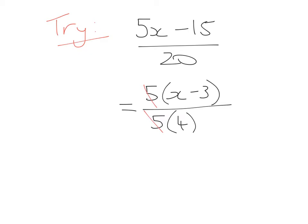Therefore, the 5s are going to divide into each other, and we're going to be left with x over 3, or sorry, x minus 3 over 4.